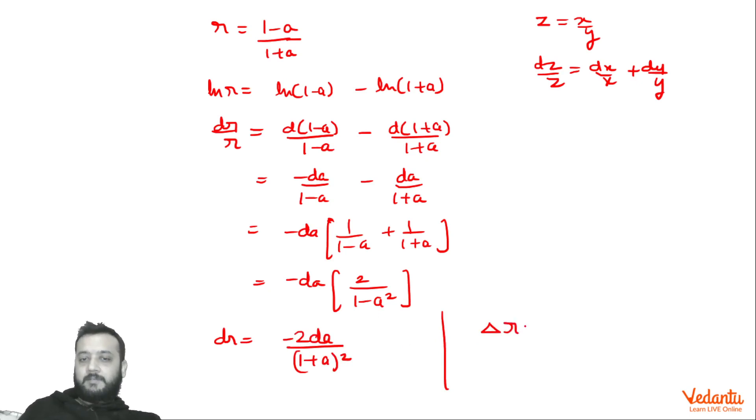Hence delta r will be 2 delta a upon (1+a)², this is our answer. There is one more thing you can see here, the relation has a minus sign. Up till now we have only differentiated from here to here.